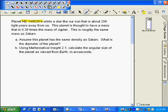And we're told that it orbits a star like our Sun. We're given the distance to it, 256 light years away. And the planet is thought to have a mass that's 0.36 times the mass of Jupiter. And incidentally, this is about the same mass as Saturn.